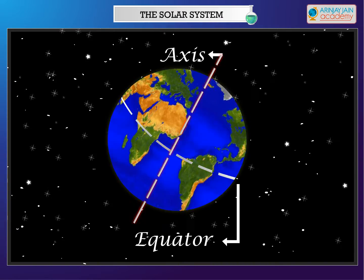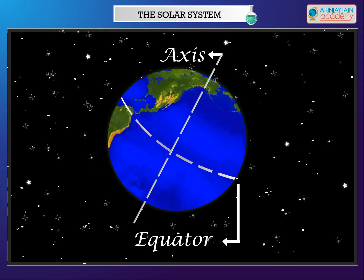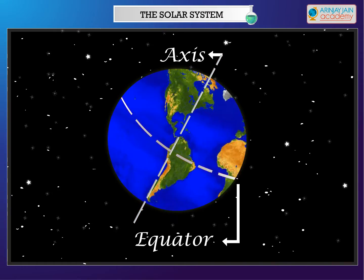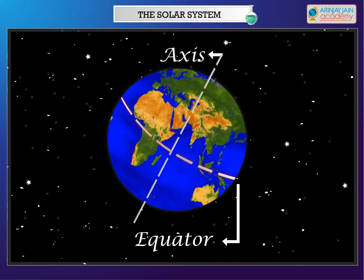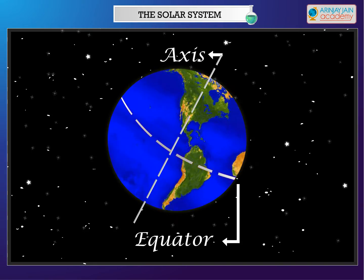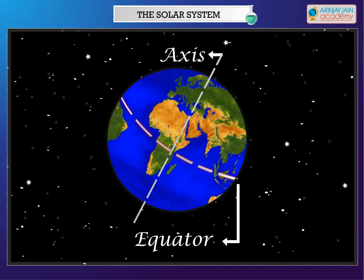The axis of the Earth is tilted. The equator is an imaginary line that runs around the Earth and divides it into two equal halves, the northern and southern hemispheres.